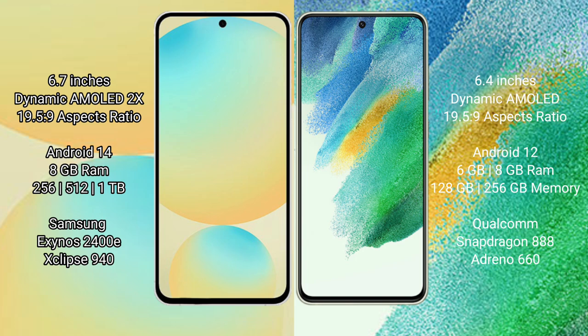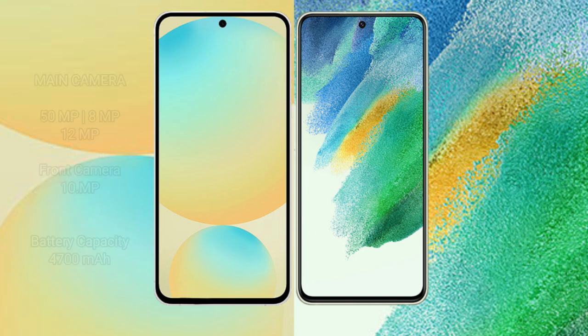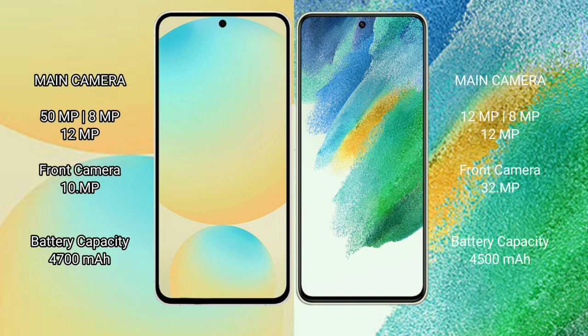The Samsung Galaxy S21 Ultra comes with 6GB or 8GB RAM and 128GB or 256GB internal storage, powered by the Qualcomm Snapdragon 888 processor with Adreno 660 GPU.